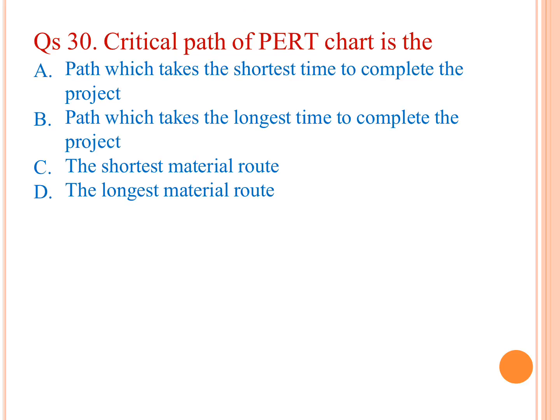The critical path of a PERT chart is the path which takes the shortest time to complete the project. A is the answer.